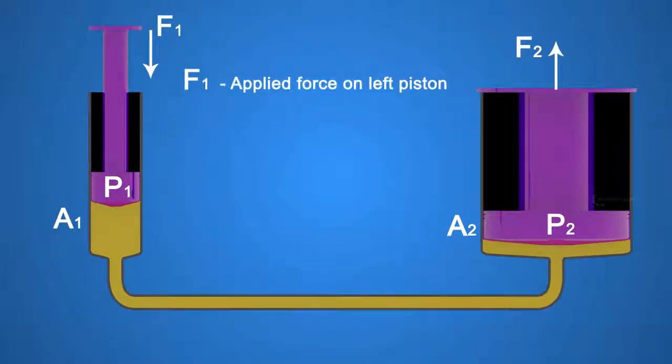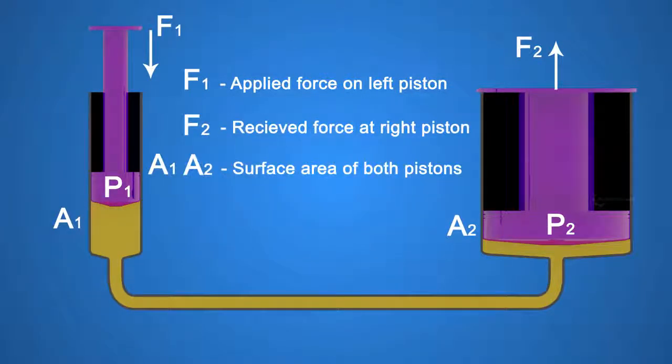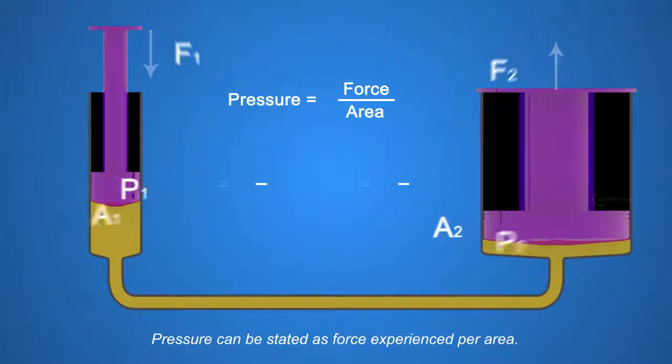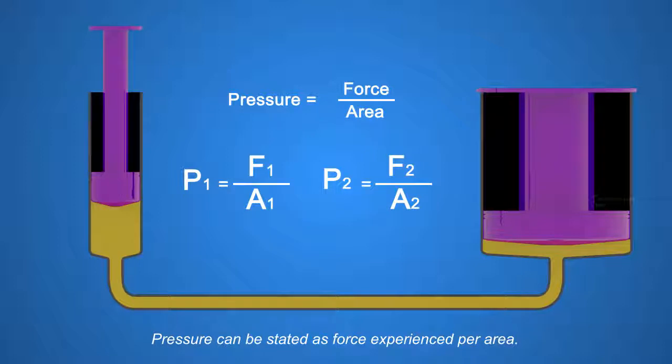F1, applied force on left piston. F2, received force at right piston. A1 and A2 are surface areas of both pistons. P1 and P2 are pressure experienced by both pistons. Pressure can be stated as force experienced per area. So P1 equals F1 by A1, and P2 equals F2 by A2.